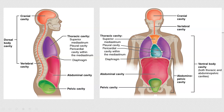The thoracic cavity is divided into smaller spaces. Shown in orange is the superior mediastinum, pericardial cavity, and two pleural cavities. Inside the pleural cavities you have lungs — right lung in the right pleural cavity and left lung in the left pleural cavity. The heart is inside the pericardial cavity. In the superior mediastinum, you have large blood vessels like the aorta and superior vena cava, as well as the trachea and thymus.